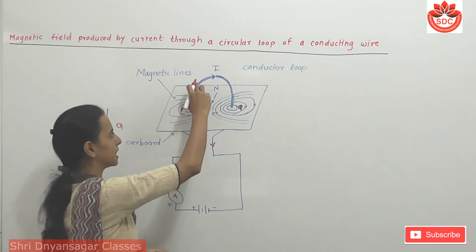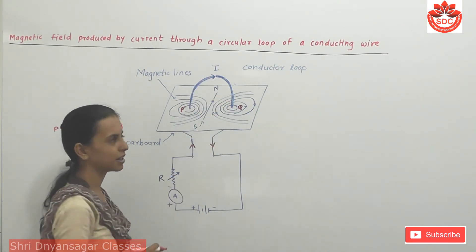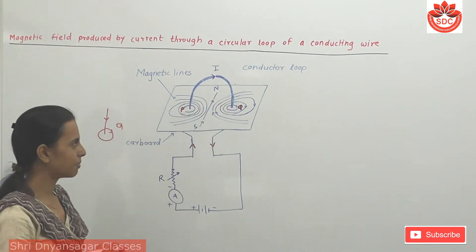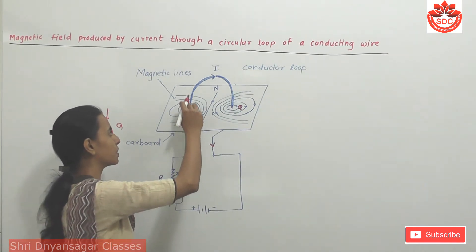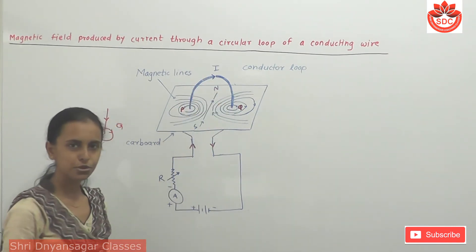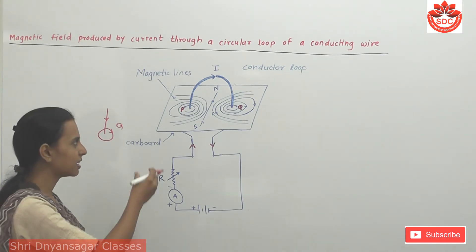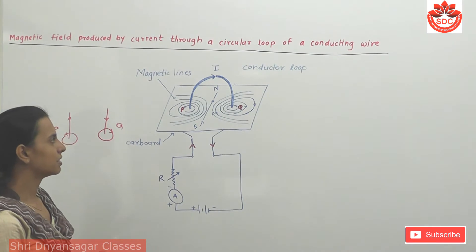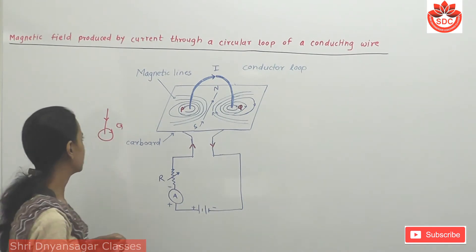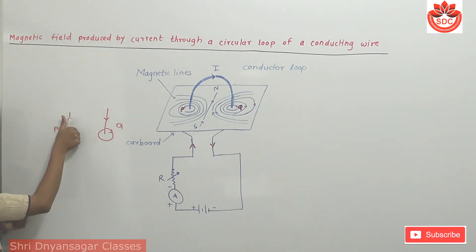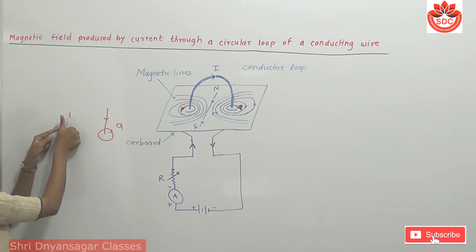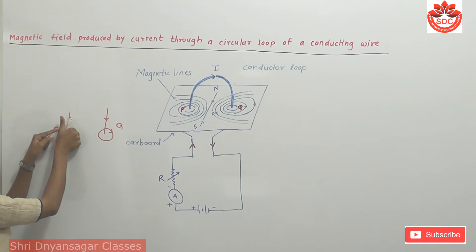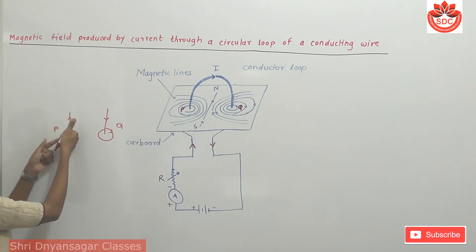The wires produce a magnetic field. What is the direction of the magnetic field? The direction of magnetic field is determined by the curved fingers in the right hand rule.